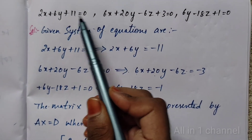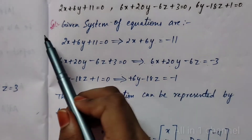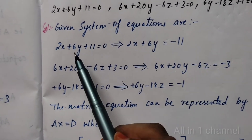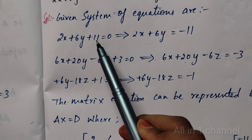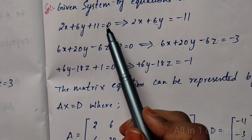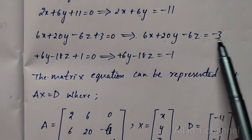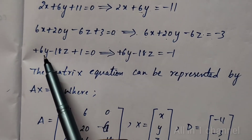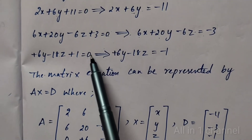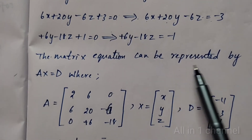Second problem. Given equations are: 2x plus 6y plus 11 equals 0, 6x plus 20y minus 6z plus 3 equals 0, and 6y minus 18z plus 1 equals 0. Rearranging by sending constants to the right-hand side: first equation becomes 2x plus 6y equals minus 11. Second equation becomes 6x plus 20y minus 6z equals minus 3. Third equation becomes 6y minus 18z equals minus 1.